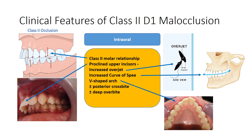The intraoral features of Class 2 Division 1 include a Class 2 molar relationship, proclined upper incisors leading to an increased overjet, an increased curve of Spee, a V-shaped arch, possible posterior crossbite, and a very deep overbite.